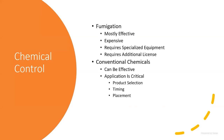For chemical control, fumigation is mostly effective but not a cure-all or guarantee. It is very expensive, requires specialized equipment and additional licensing, so most growers hire out an independent contractor. Conventional chemicals can be effective, but application is critical — getting the product where it needs to be, at exactly the right time, and choosing the right product for the job.